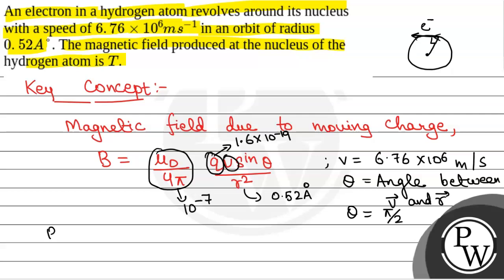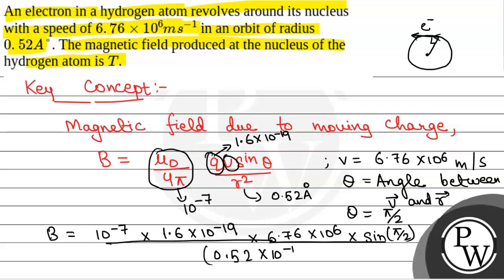So B, the magnetic field, will be equal to 10 to power minus 7, that is mu0 by 4 pi, times charge on electron, 1.6 times 10 to power minus 19, times V, 6.76 times 10 to power 6 meters per second, times sin pi by 2, that is 1, divided by r square, 0.52 times 10 to power minus 10 meters square.